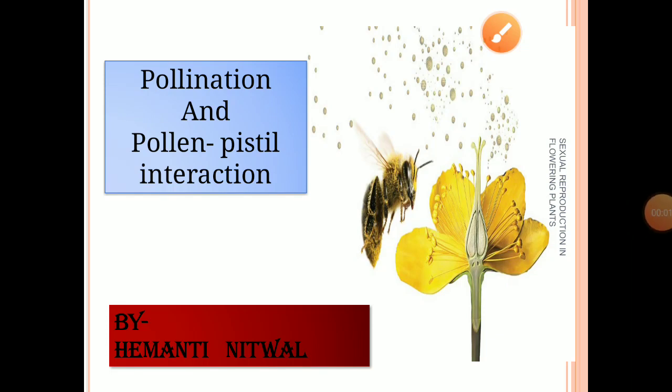Welcome back everyone. Let's resume this chapter on sexual reproduction in flowering plants. In previous topics we discussed pre-fertilization events, that is microsporogenesis and megasporogenesis. These two events are part of gametogenesis, where male and female gametes are formed.